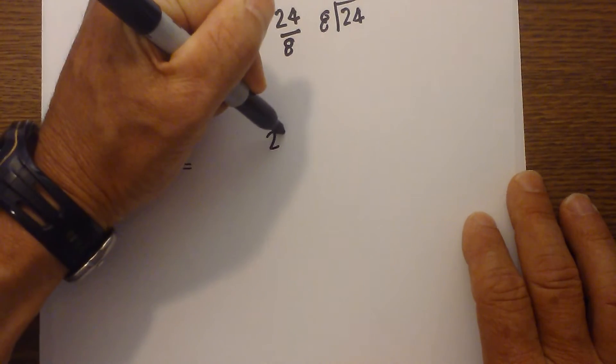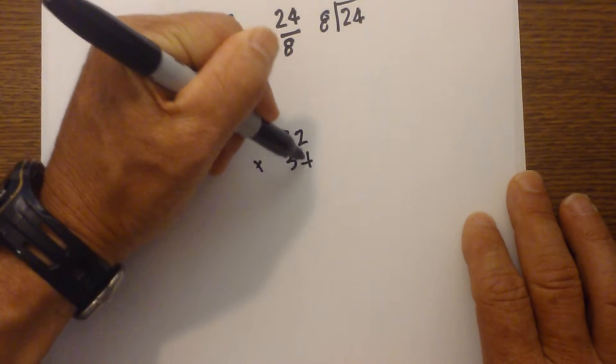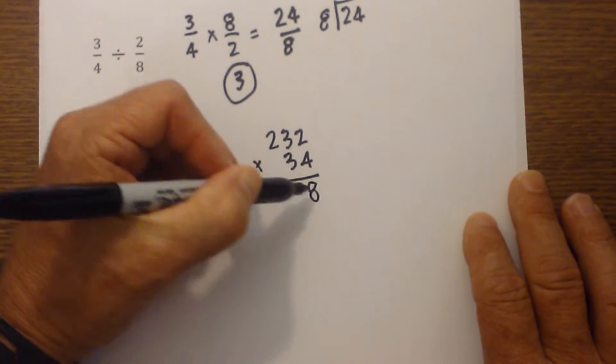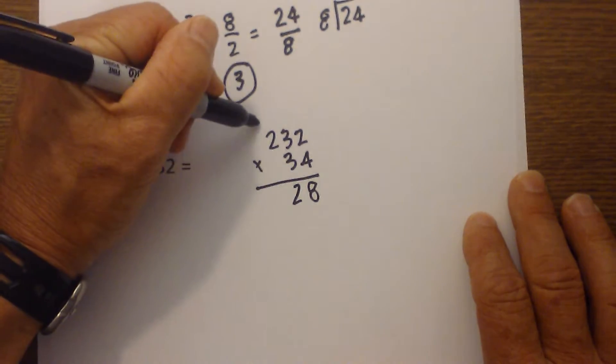So let me show you how that works. 232 times 34. 4 times 2 is 8. I'll try to go quickly through this. 4 times 3 is 12, carry the 1.